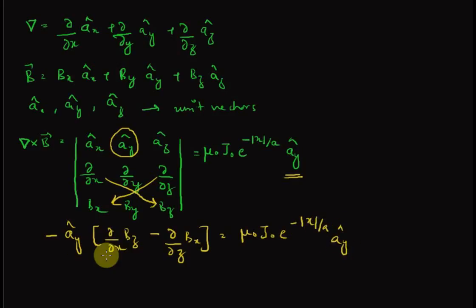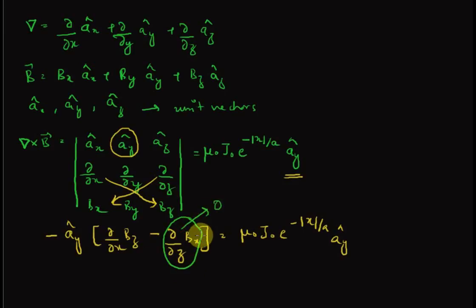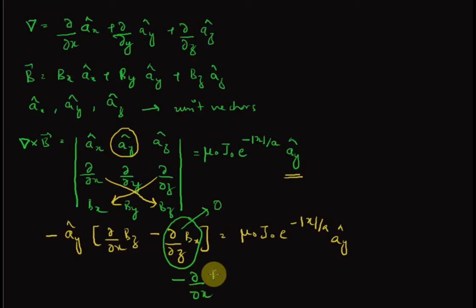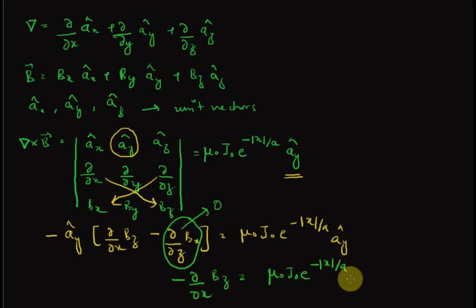We can further simplify. The term ∂B_x/∂z goes to zero because we already determined there is no change in flux density along the z direction. So what we are left with is: minus ∂B_z/∂x equals mu_0 J_0 e^(|x|/a).